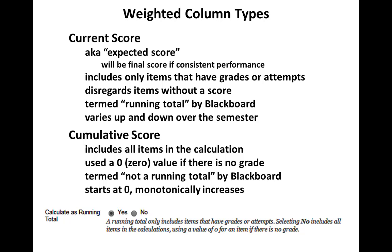There are two weighted column types that I find useful. One is current score and the other is cumulative score. The current score, also called expected score, is what a student's final score will be if the performance for the rest of the semester is consistent with the performance up to this point. It includes only items that have grades or attempts, and disregards items without a score. It's termed 'running total' by Blackboard, and this score will vary up and down over the semester depending on the student's performance.